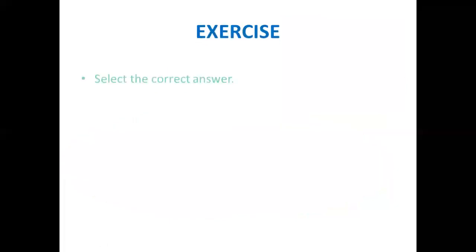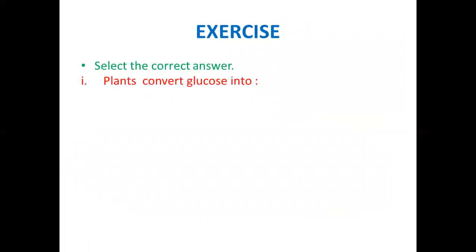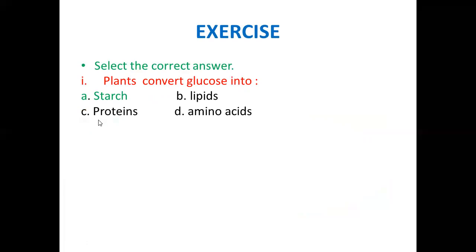Coming towards the exercise — select the correct answers. Number one: plants convert glucose into starch, lipids, proteins, or amino acids? The correct answer is starch. Plants convert glucose into starch, while animals convert glucose into glycogen.